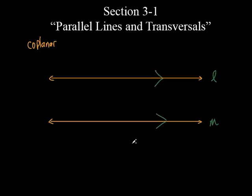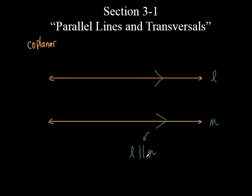Let's go further and show you the symbol for parallel. Instead of writing out 'is parallel to,' we write line L, then the parallel symbol — just two straight vertical lines — then line M. So line L is parallel to line M. Instead of writing out the words, we just use that little symbol to mean these two lines are parallel to each other.